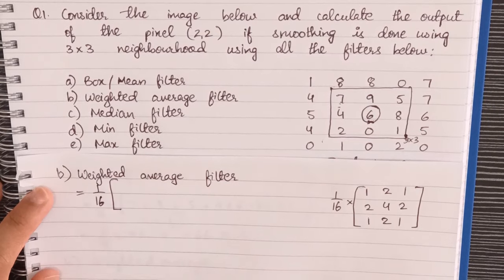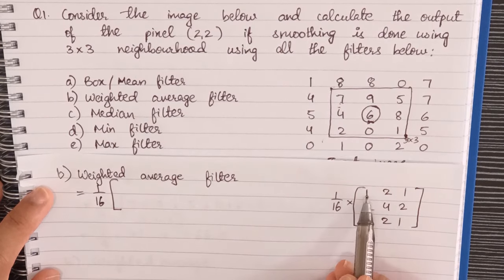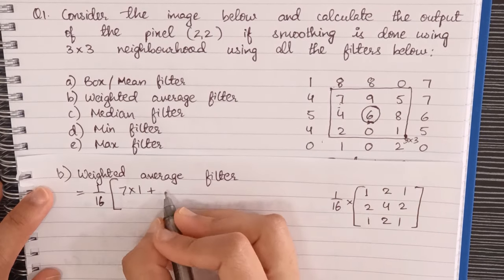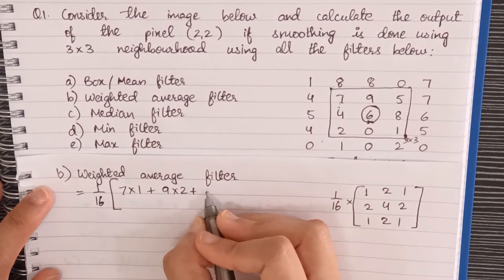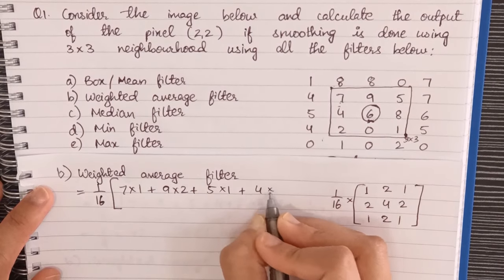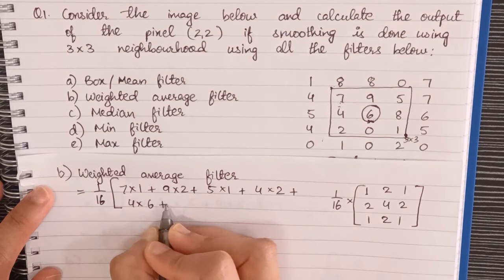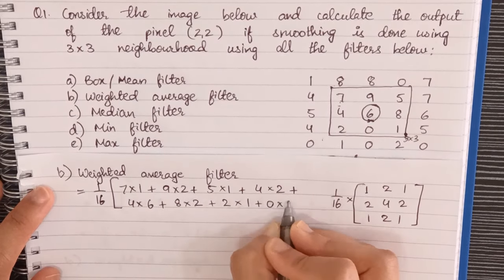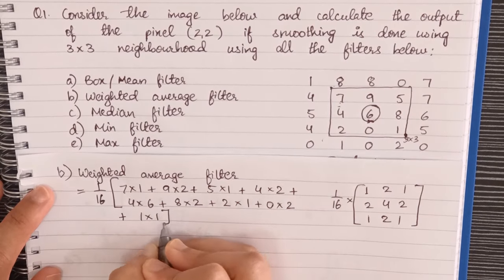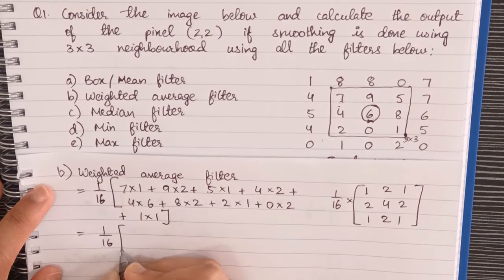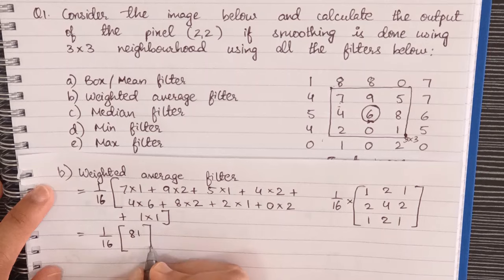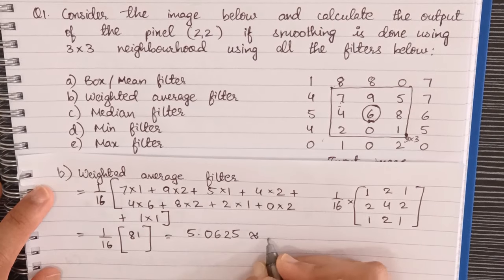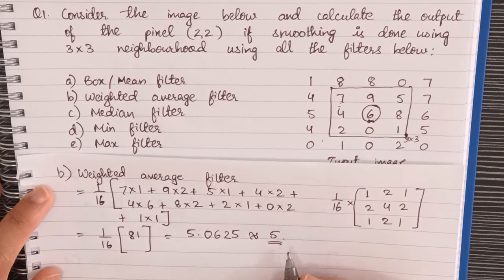Next what we'll do is we'll take each of these elements and multiply by these corresponding elements. Here we'll have 7 into 1 plus 9 into 2 and so on. We'll multiply 5 into 1 plus 4 into 2 plus 6 into 4 plus 8 into 2 plus 2 into 1 plus 0 into 2 plus 1 into 1.